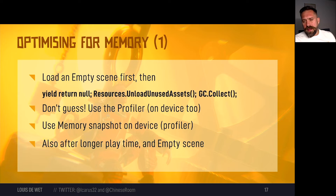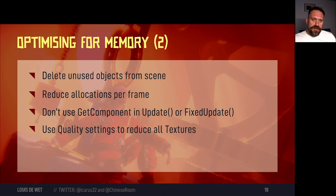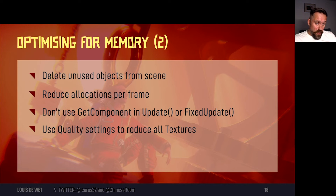Don't guess — always use the profiler to check memory allocations. When you connect Unity's profiler to the device, you can use the memory snapshot tool to see exactly what is taking up memory on the device. Note that doing this in the editor will give totally different results. Take snapshots after a longer playtime, particularly after loading and unloading a few levels. Also take a snapshot after the empty scene was loaded — this will clearly show assets that were not unloaded for some reason. You'll definitely spot things that you don't expect to be there. Don't just disable unused objects — delete them from the scene entirely, as they can take up space. Use the profiler to find out what allocates memory every frame and try to reduce these by caching results. GetComponent was a culprit we found — don't use it in Update or FixedUpdate calls; rather call it in Awake or Start and cache the result.